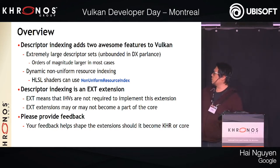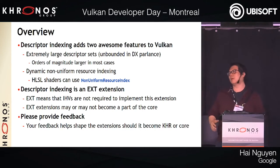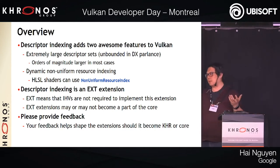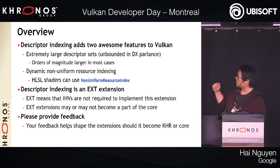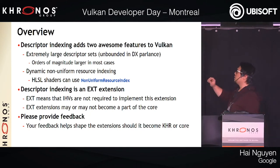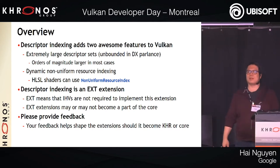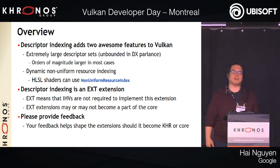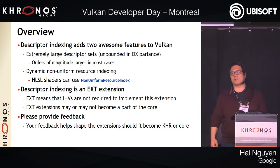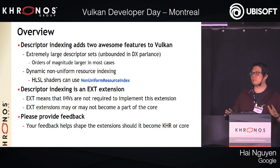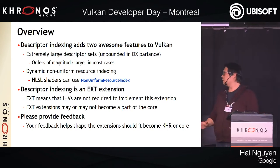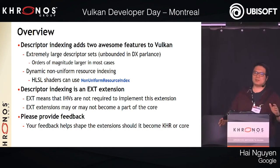Descriptor indexing brings two features to Vulkan. The first is extremely large sets — unbounded in DX talk — orders of magnitude larger, like crazy large. The next is dynamic non-uniform resource indexing, mostly to make non-uniform resource indexing possible in HLSL. It's been highly requested, looks like an awesome feature, and I get to write all the test code for it.